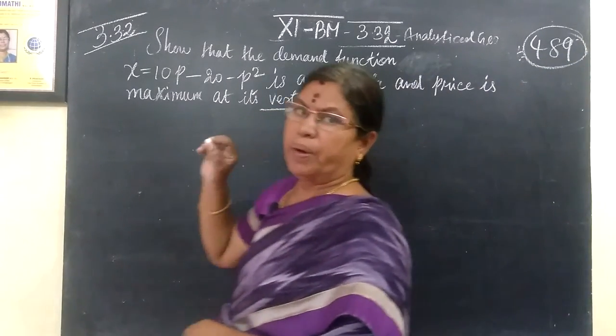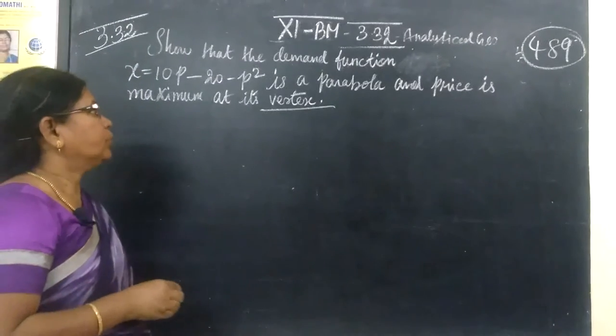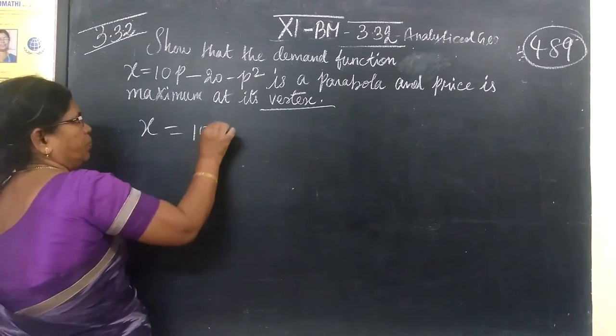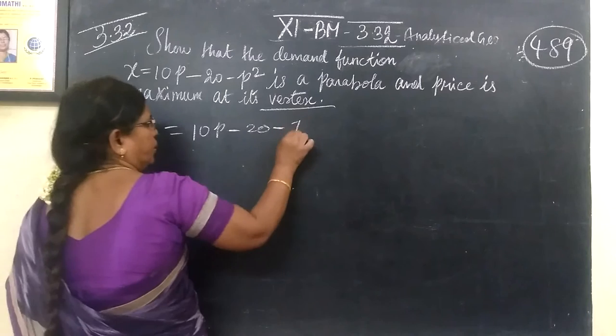This is equal to 10p minus 20 minus p squared.